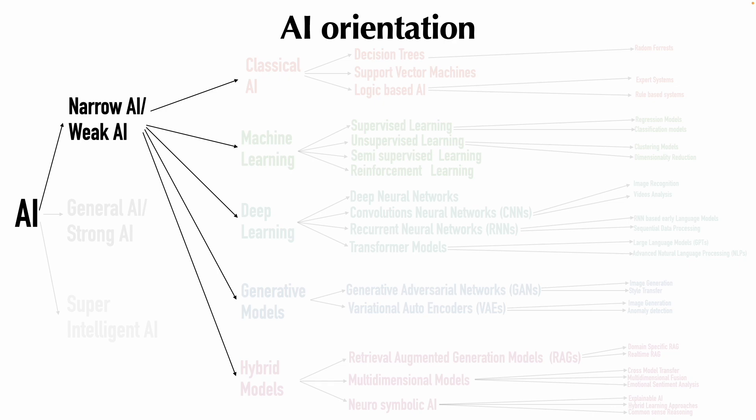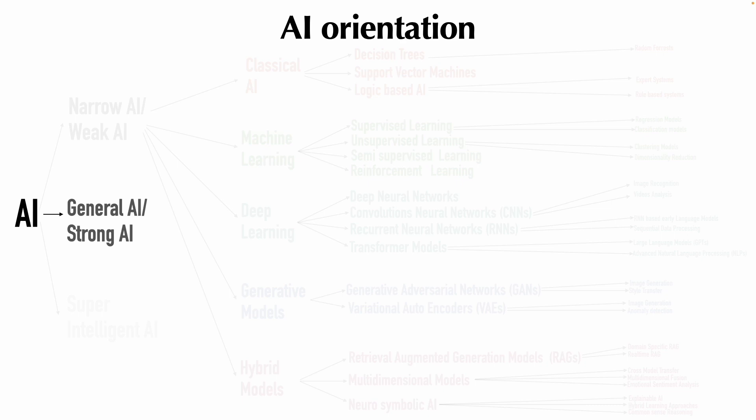The other one is general AI or also called as strong AI. Right now this is just a concept. This thing doesn't exist as of now. Theoretically it exists. A lot of research is going on.